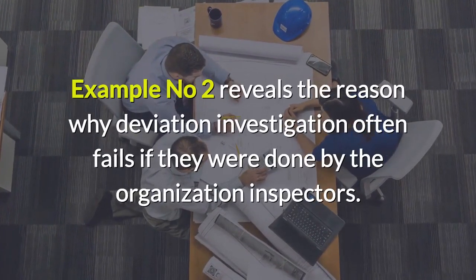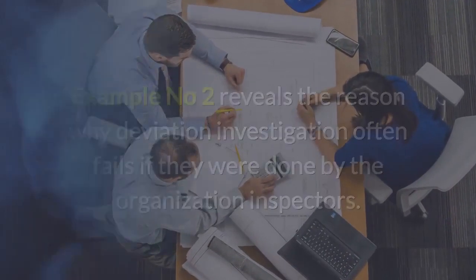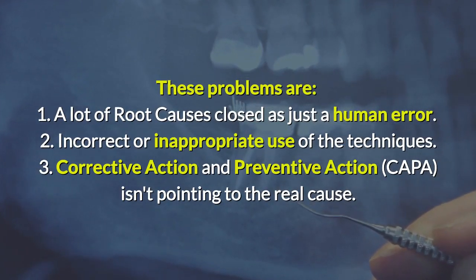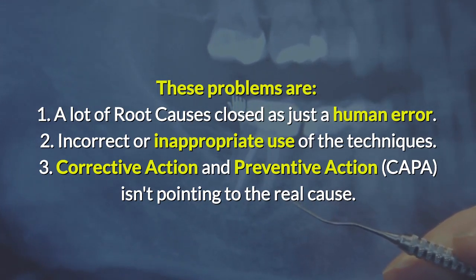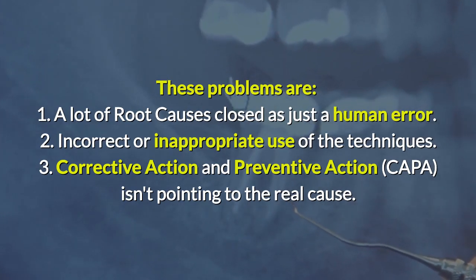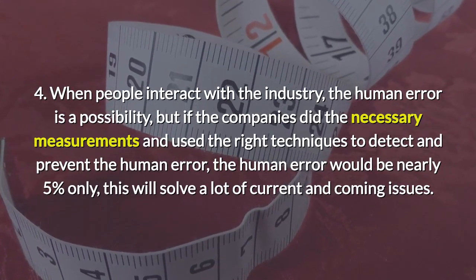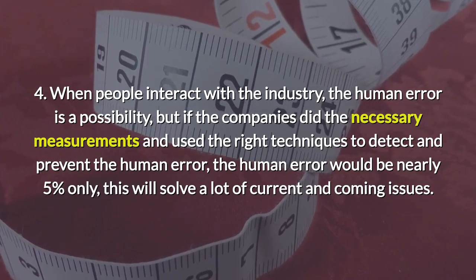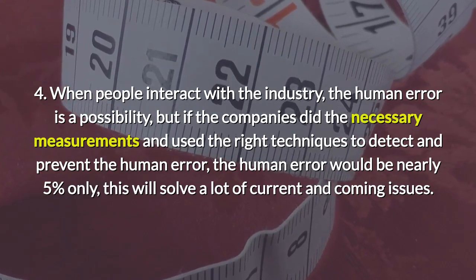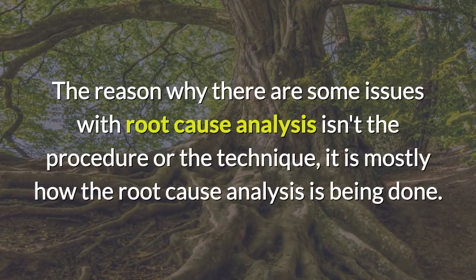Example two reveals why deviation investigations often fail when done by organization inspectors. The common problems are: one, many root causes are closed as simply human error; two, incorrect or inappropriate use of techniques; three, corrective action and preventive action (CAPA) not pointing to the real cause. When people interact with industry, human error is a possibility — but if companies take the necessary measurements and use the right techniques to detect and prevent human error, it would account for nearly five percent only.